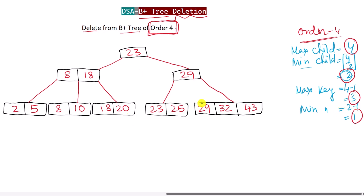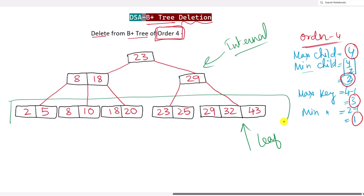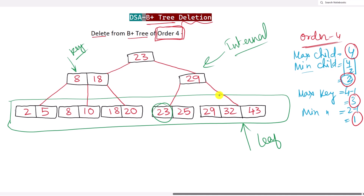In this tree, the bottom nodes are the leaf nodes and the upper nodes are the internal nodes. In the leaf nodes we have all the actual data. In the internal nodes we have key indices, which are not data — they are basically used to navigate to that particular data. So when we try to delete any data, we delete from the leaf node, and if that data is also in the indices, we have to remove it from there as well.